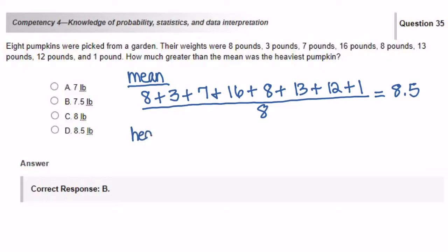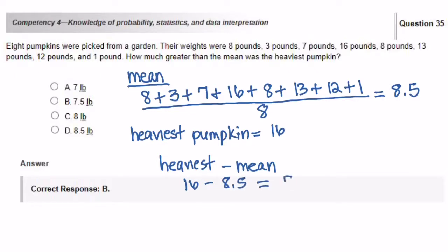So the mean came out to be 8.5 pounds. So now we have to figure out which one is the heaviest pumpkin. Well, the heaviest pumpkin weighs 16 pounds. So we're going to find a difference. 16 pounds minus 8.5 pounds, which is the average, is going to get us 7.5 pounds.